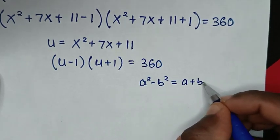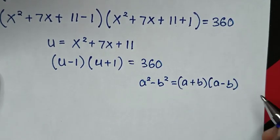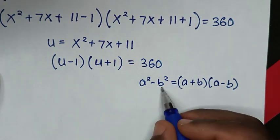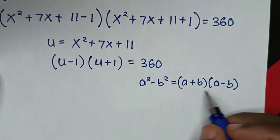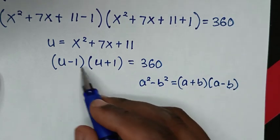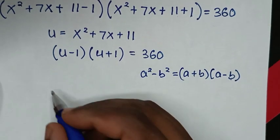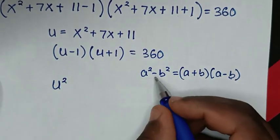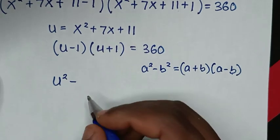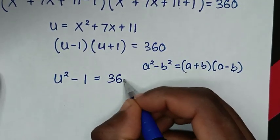We recognize this is in the form (a+b)(a−b) = a²−b², where a = u and b = 1. So it becomes u²−1² = 360, which is u²−1 = 360.